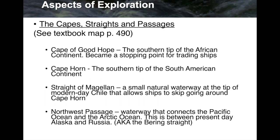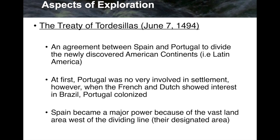Next is Cape Horn, the southern tip of the South American continent. Then we have the Strait of Magellan, a small natural waterway at the tip of modern-day Chile that allows ships to skip around Cape Horn by passing through the strait instead. Finally, the Northwest Passage is a waterway connecting the Pacific Ocean and the Arctic Ocean, between present-day Alaska and Russia, also known as the Bering Strait.